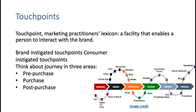A brand instigated touch point might be interruption marketing — for example, targeting somebody with a particular advert to show up in their news feed. A customer instigated touch point could be the customer doing a Google search and finding your Facebook page or your website and coming into contact with your brand that way. Either way, we need to think about how we communicate with the customer at all of those times, and what our messaging is, so that we appeal to them, develop a relationship, achieve our overall marketing objectives, and help the consumer to achieve their objectives.